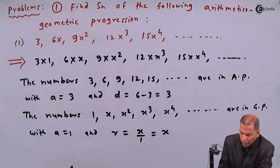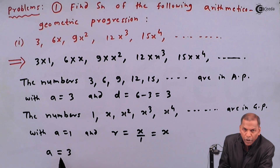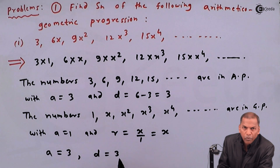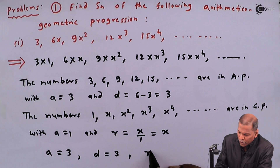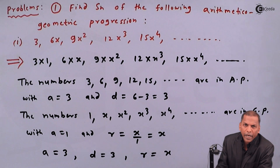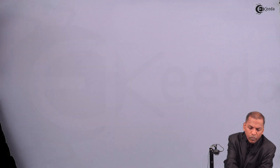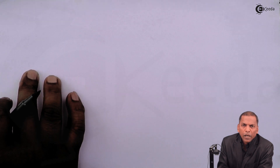So in this way we get: first term a equal to 3 (from the AP), common difference d equal to 3 (also from the AP), and common ratio r equal to x (from the GP). Now we write the formula for S_n of an arithmetico-geometric progression.